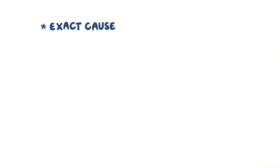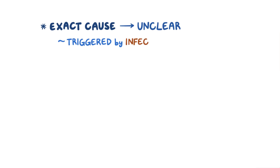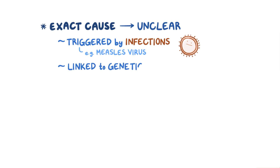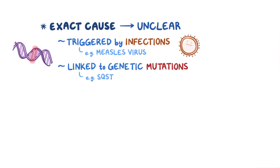The exact cause of Paget's disease of bone is unclear, but it can get triggered by infections like the measles virus, and is linked to genetic mutations like the SQSTM1 mutation, which encodes a protein involved in regulating osteoclasts.